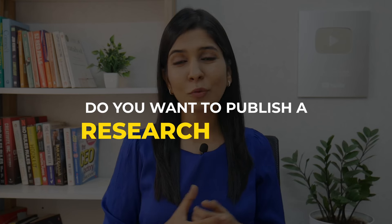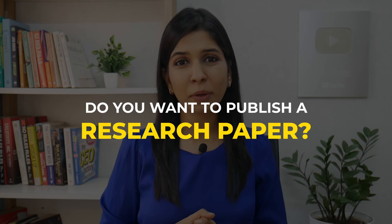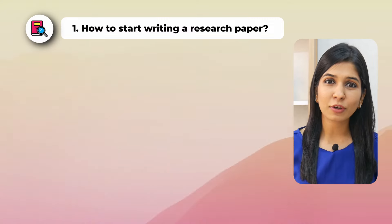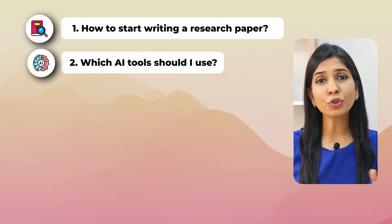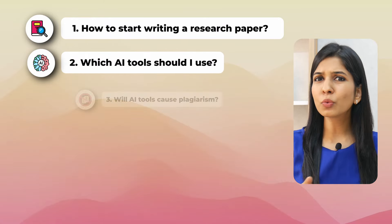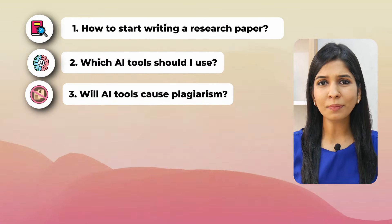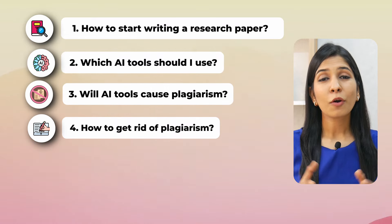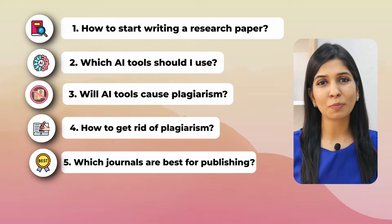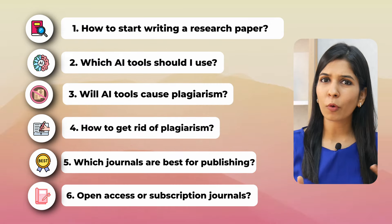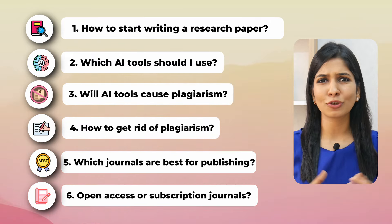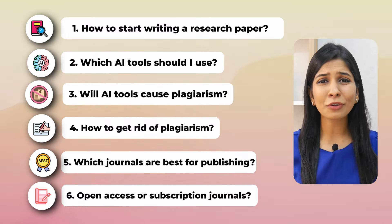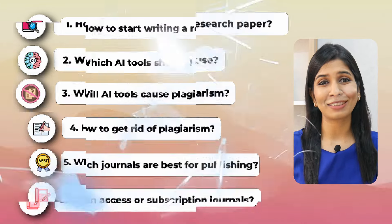Are you someone who wants to publish a research paper? Do you find yourself stuck with these questions: How do I start writing my research paper? Which AI tools should I be using? Will using AI tools cause plagiarism? How do I get rid of this plagiarism in my writing? What journals are best to publish my work? Should I go for open access journals or subscription journals? What is the difference and how does it even matter?